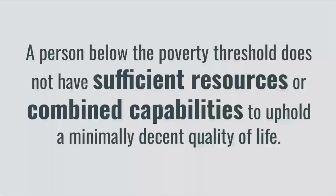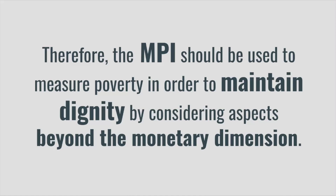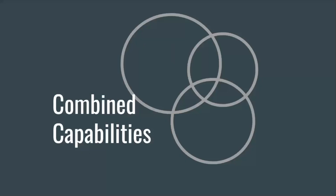A person below the poverty threshold does not have sufficient resources or combined capabilities to uphold a minimally decent quality of life. Therefore, the MPI should be used to measure poverty in order to maintain dignity by considering aspects beyond the monetary dimension. Combined capabilities are the possible choices that one can make based on their internal motivations and external factors, such as politics or financial situations. Many current definitions of poverty use income lowness as the determining factor. For example, the OPM, which we discussed earlier, is used by the U.S. government to measure poverty using the threshold of the price of three economy food baskets based from the 1960s, also adjusted for inflation. Though we recognize that money is important in maintaining a certain quality of life, it is the resources and opportunities that it provides that plays the most important role in one's well-being.